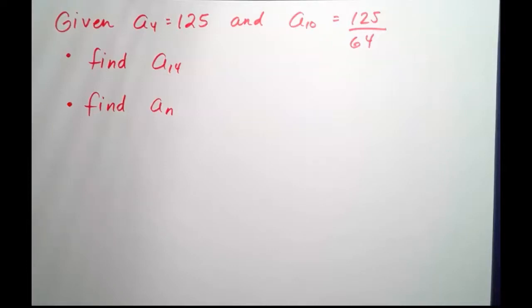So we're given two terms, and we can be given any two terms in a geometric sequence. From there, we can set up a system of equations and solve for the unknowns. The unknowns being a sub 1 and also the common ratio that's missing. So let's start by setting up everything that's given.